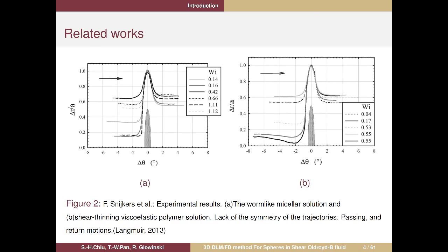Here are two experimental results in core-weight flow of two different kinds of non-Newtonian fluids. Picture A shows worm-like micellar solutions, and picture B shows shear-thinning viscoelastic polymer solutions. They record the trajectory of particles and use the Weissenberg number — a parameter of elasticity — to control the fluid's elasticity and record particle trajectories.